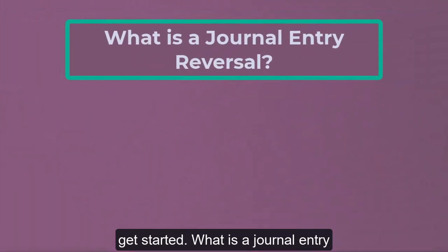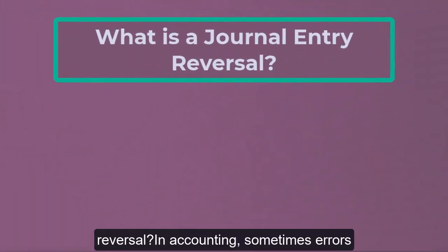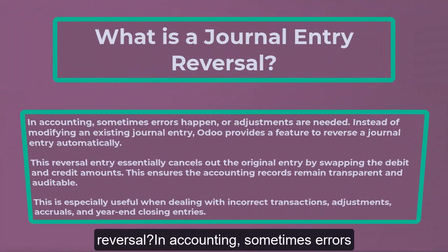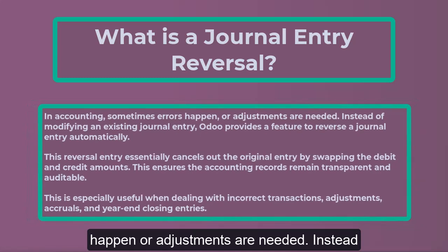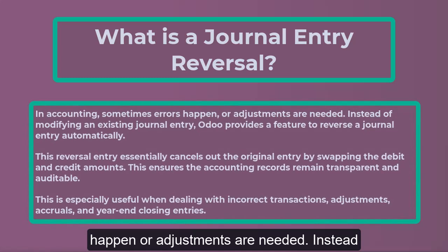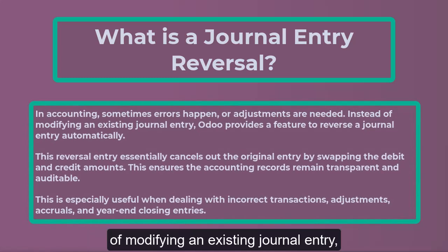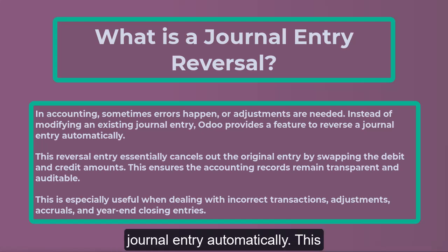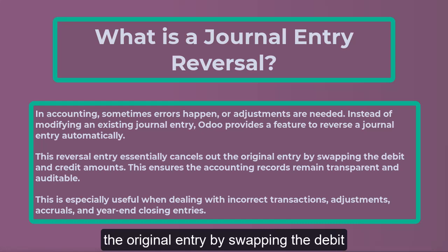What is a journal entry reversal? In accounting, sometimes errors happen or adjustments are needed. Instead of modifying an existing journal entry, Odoo provides a feature to reverse a journal entry automatically. This reversal entry essentially cancels out the original entry by swapping the debit and credit amounts.